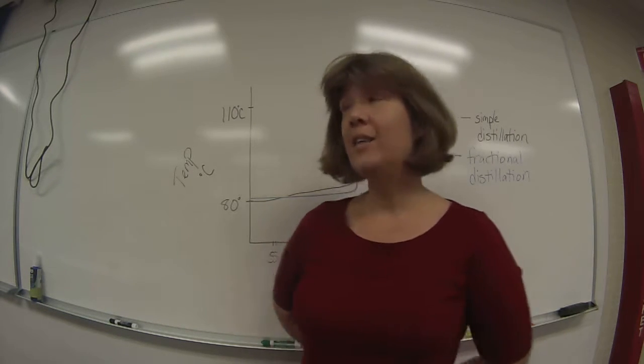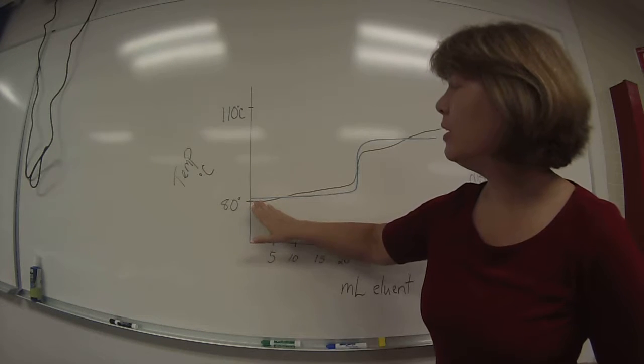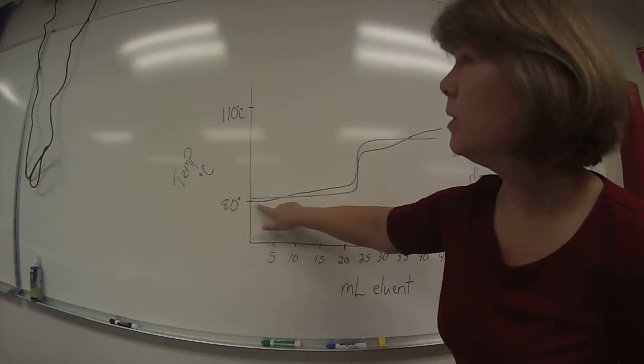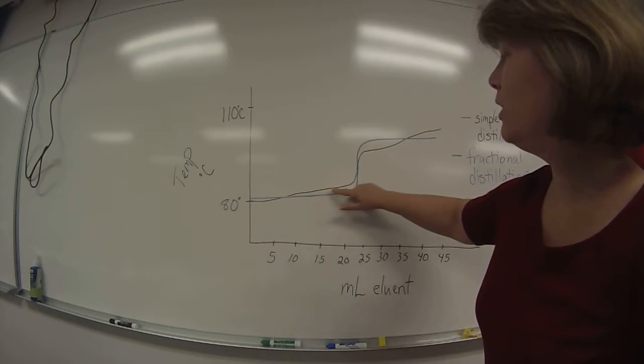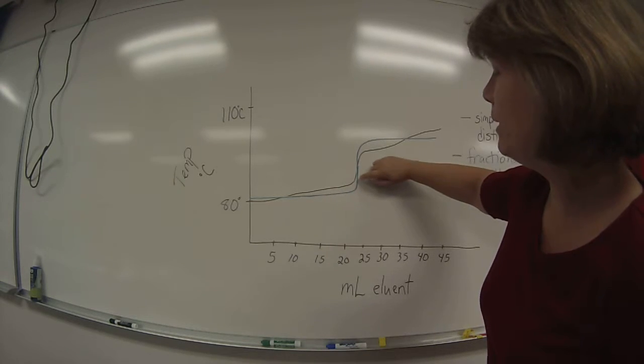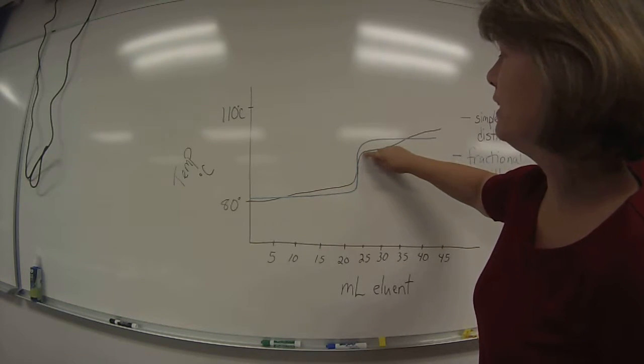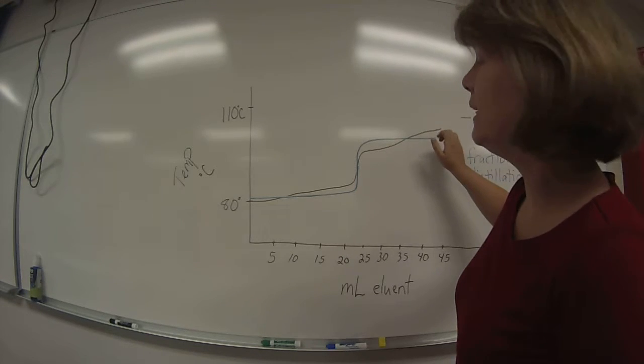Now, as you can see in the graph, the temperature increases. Look at the black line. The temperature increases gradually until about 25 milliliters, and then the temperature increases rather sharply, and then it increases gradually again.